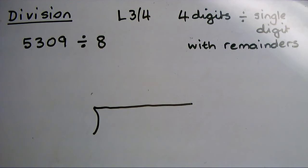I'm going to divide a four-digit number this time, 5309, dividing it by 8. Because this is a slightly higher level, this sum will come out with a remainder.